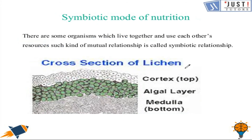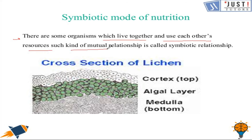Symbiotic mode of nutrition: symbiosis is the phenomenon by which two organisms maintain a relationship that is mutually beneficial. Organisms involved in this relationship are called symbionts. For example, some fungi live in the roots of trees, get nutrients from them, and in return help the plant absorb water and other nutrients from the soil. Lichens are another example — alga and fungus living together in a symbiotic relationship.